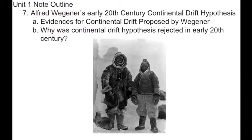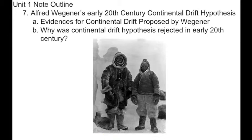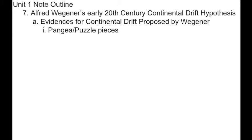Alfred Wegener, shown in this image on the left, was known during his lifetime for his accomplishments in meteorology and polar research. Here he is shown in a picture taken in Greenland in November of 1930. He was 50 years old. That picture was actually taken right before his death on this expedition in Greenland. He was buried by his companion on the right, and his companion's body was never found after this expedition. Besides being a polar researcher and meteorologist, Alfred Wegener today is most known for his Continental Drift Hypothesis.